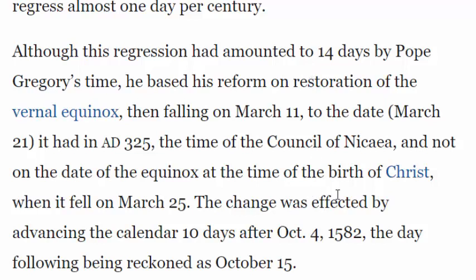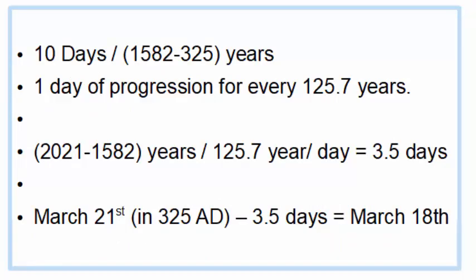If we lost 11 days over the course of about 1,200 years — from 325 AD to 1582 AD — then we should have lost more than one day from 1582 to 2021. The math works out to: you lost 10 days from 325 AD to 1582 AD, which equates to about one day for every 125.7 years.